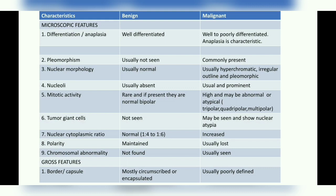In a malignant tumor, the nucleus can be hyperchromatic, meaning the cell has an increased amount of DNA with abundant chromatin, so when stained the nucleus appears darkly stained. The nucleus size and shape can also vary and become irregular. Nucleoli are usually absent in a benign tumor, whereas they are prominent in a malignant tumor.